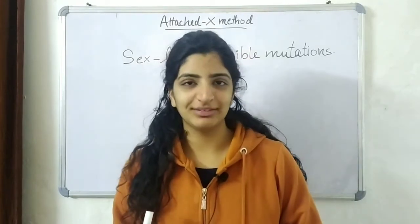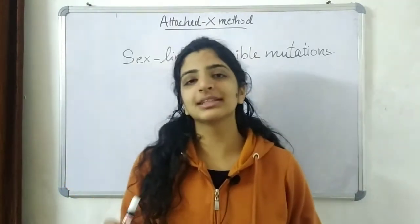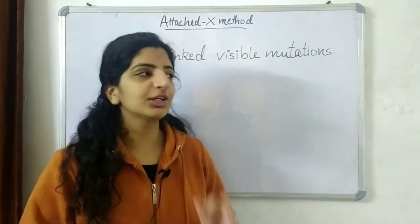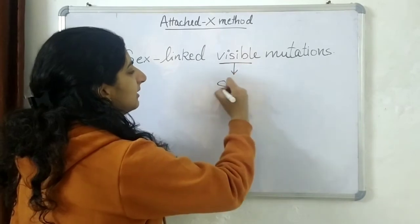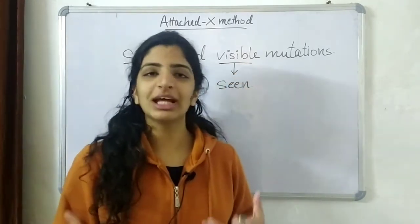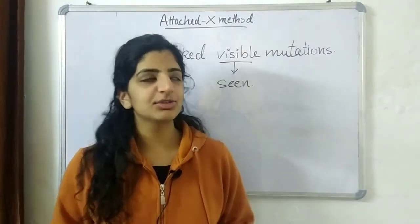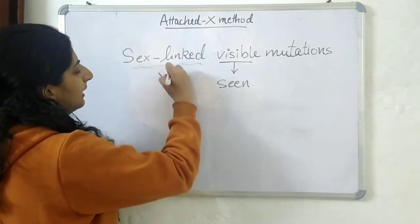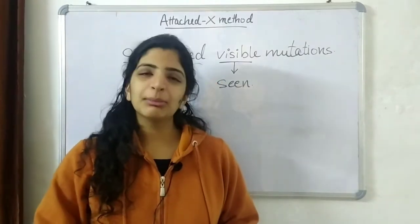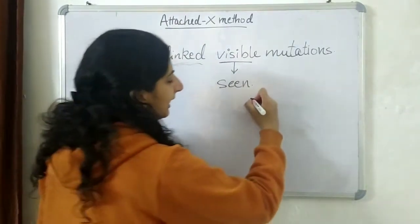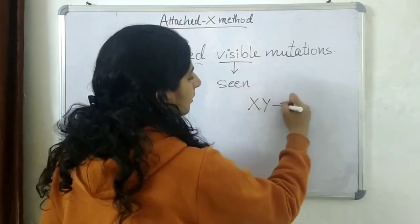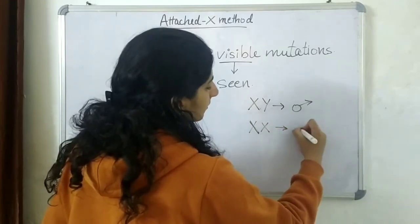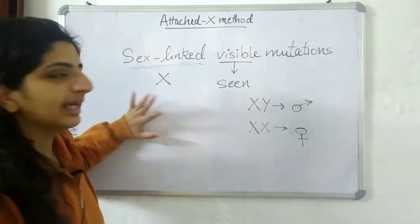Today we discuss the attached X method. The attached X method helps us detect sex-linked mutations, but these are visible mutations and not lethal. Visible mutations means they can be easily seen in the organism or the progeny. The attached X method, as the name suggests, has something to do with the X chromosomes. Sex-linked mutations are related to the X chromosome, and if you remember XY sex determination, XY forms a male while XX denotes a female.